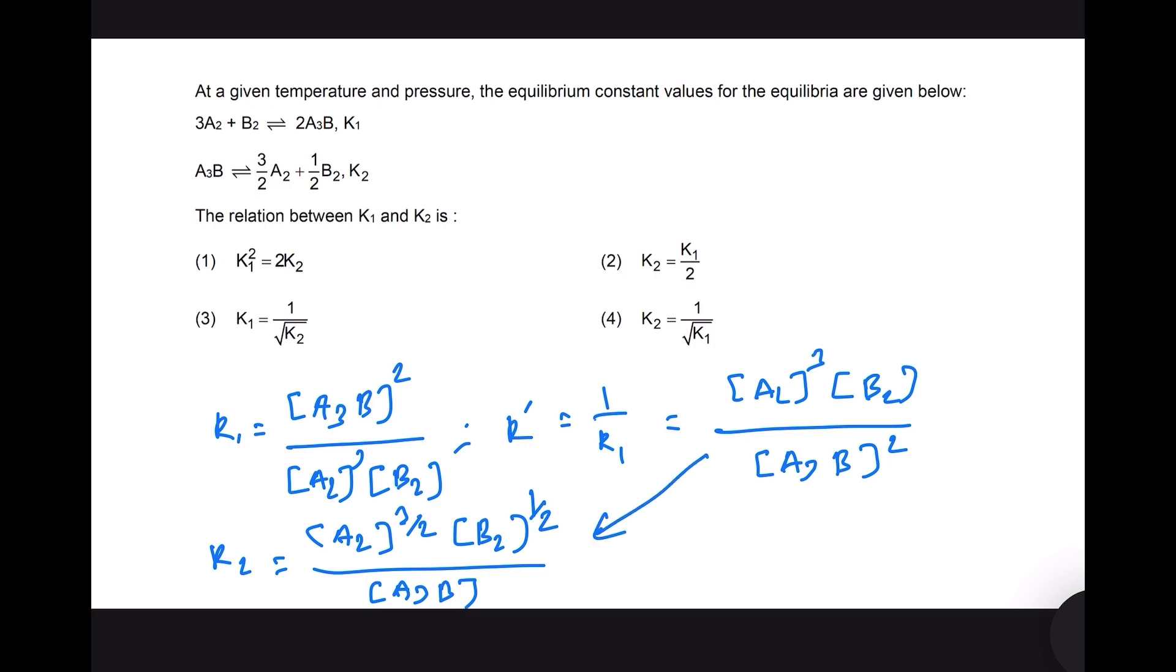If you relate these two, we can write that the square root of k prime will be exactly equal to that. So if you take a square root of k prime, then it will be a2 to the power 3/2, b2 to the power 1/2 divided by a3b. And therefore, we know that k prime is 1 by k1.